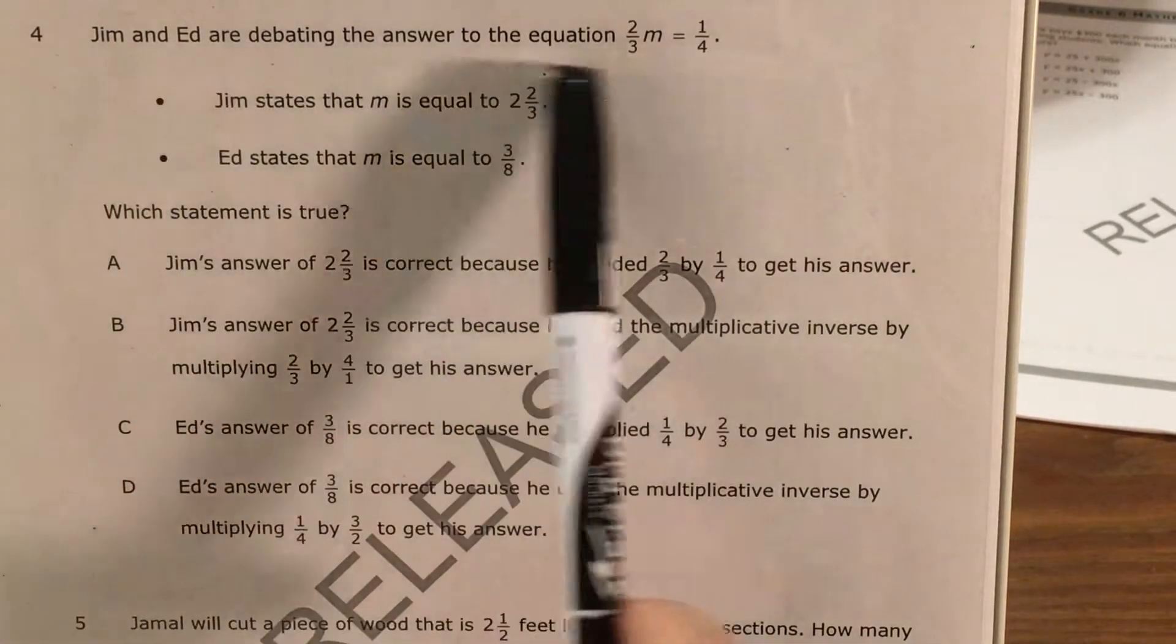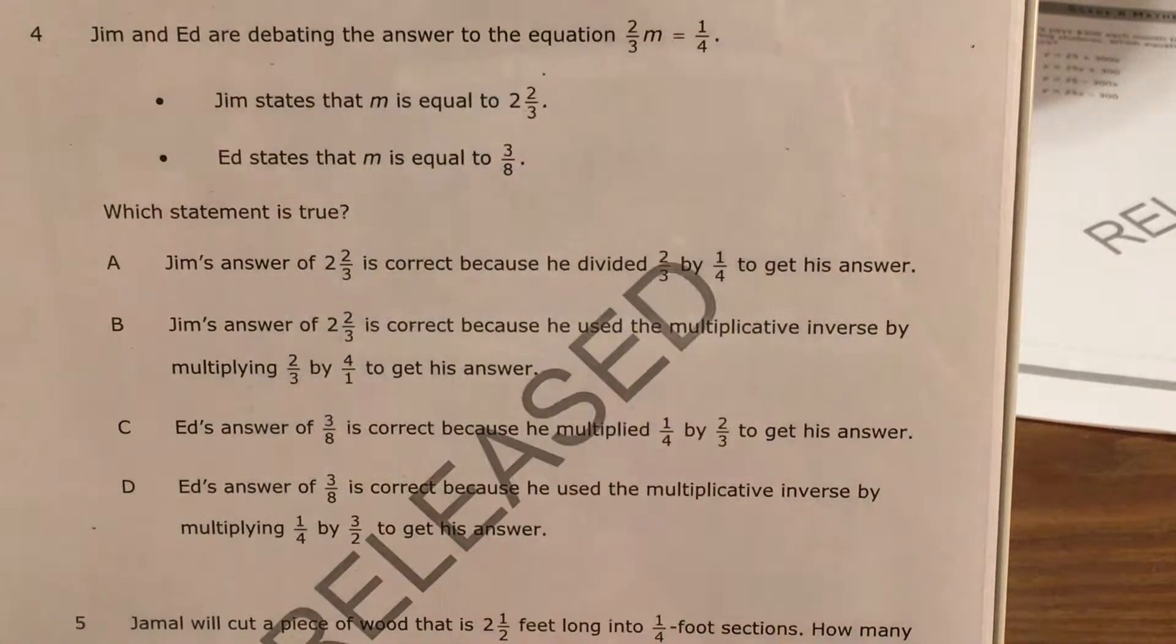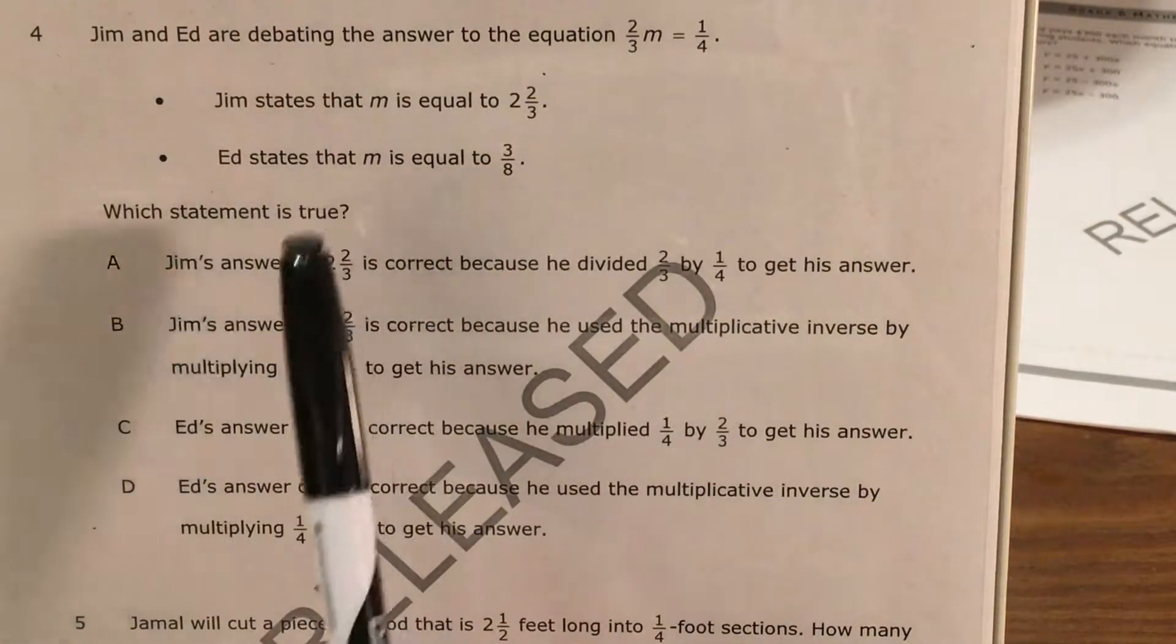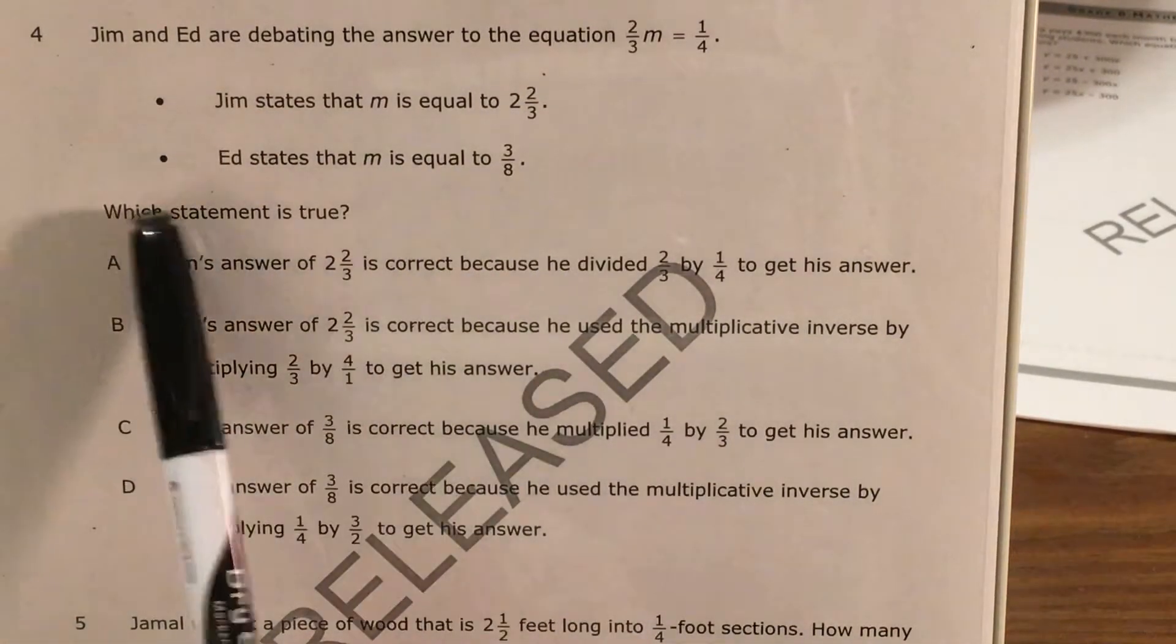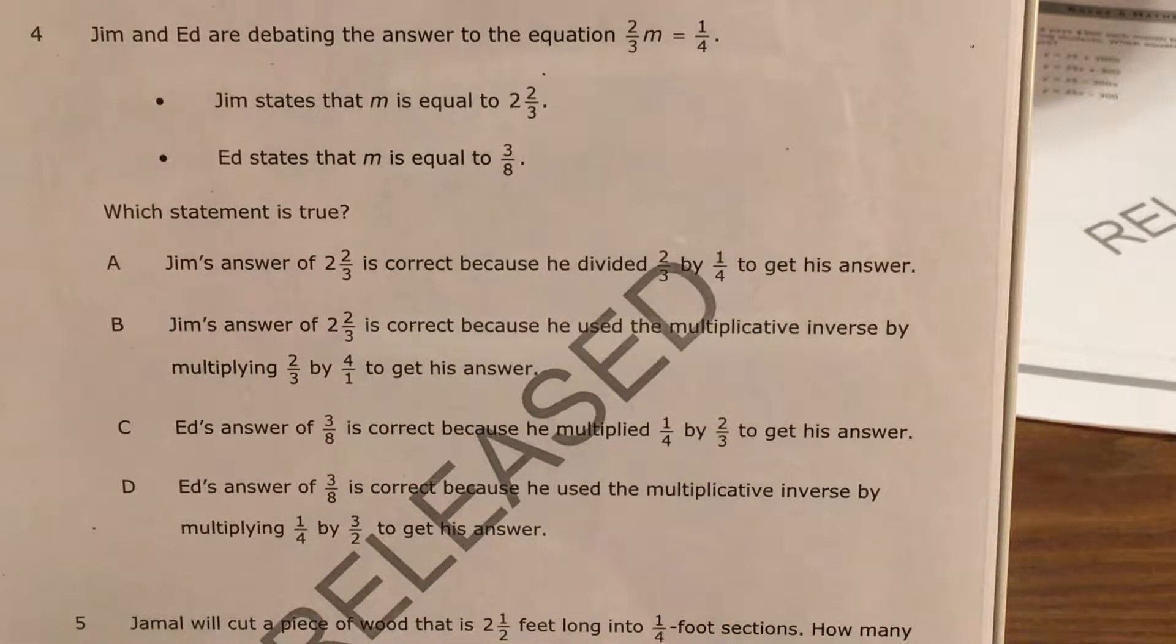We can see that Jim and Ed are trying to solve this equation. Two-thirds times some number that they call m equals one-fourth. Jim states that m is equal to two and two-thirds. Ed states that m is equal to three-eighths. And we're asking which statement is true, and our answers are just all kinds of mathematical jargon mumbo-jumbo.